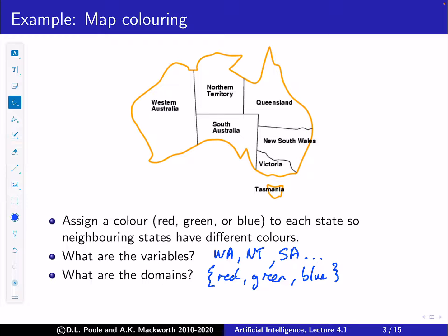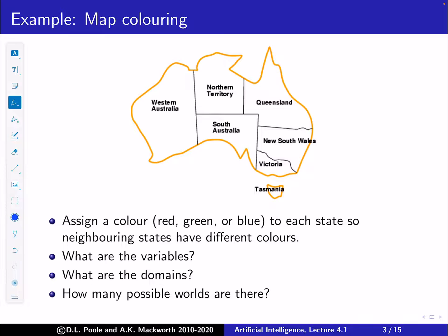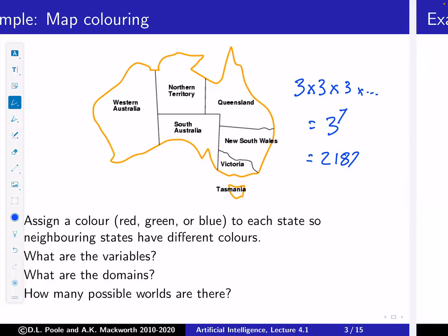The domain is {red, green, blue}. We're going to assign to each state a color. How many possible worlds are there? There are three for Western Australia, times three for Northern Territory, times three for South Australia, and so on. There are seven states total, so it's three to the seventh, which is 2187.